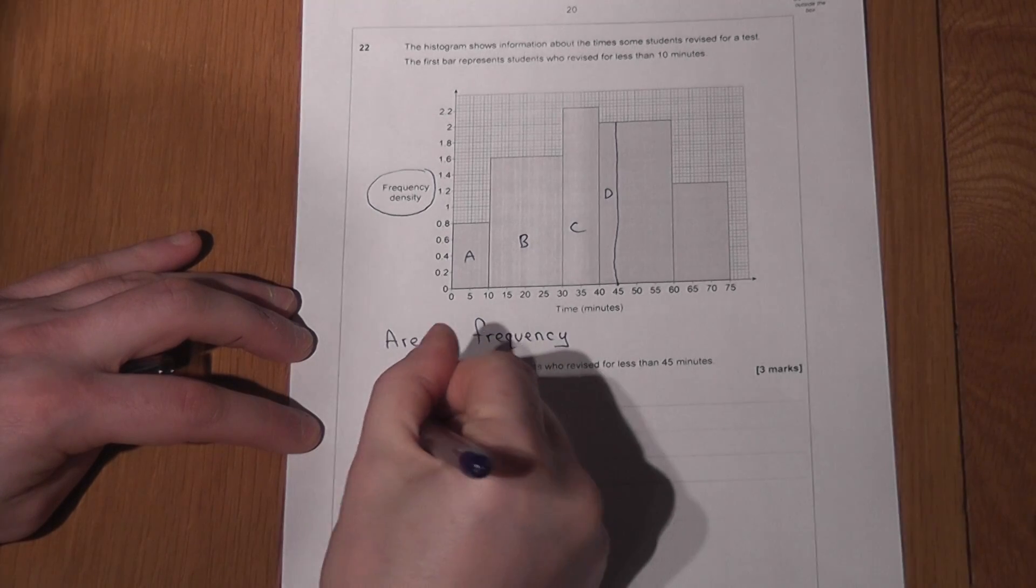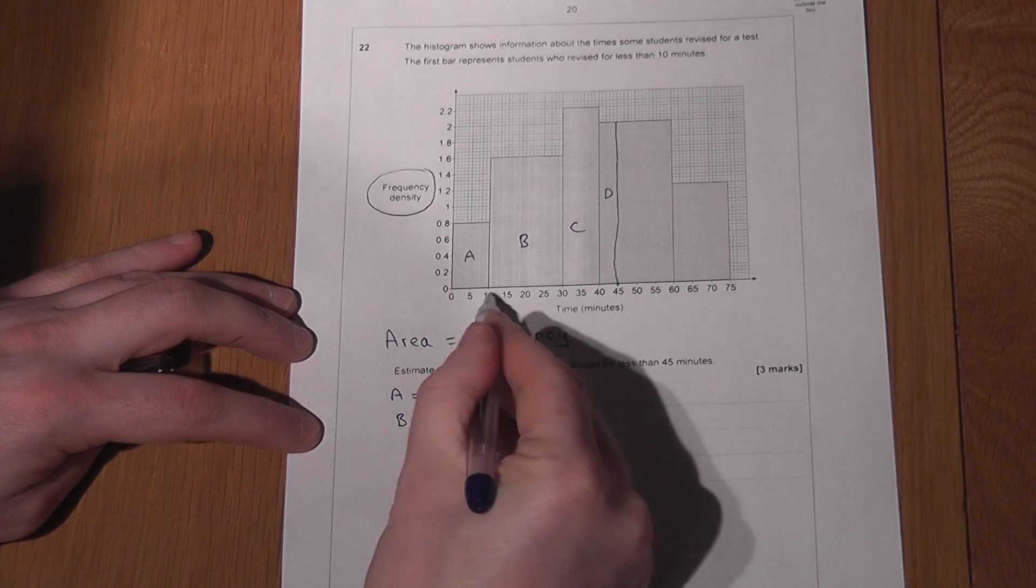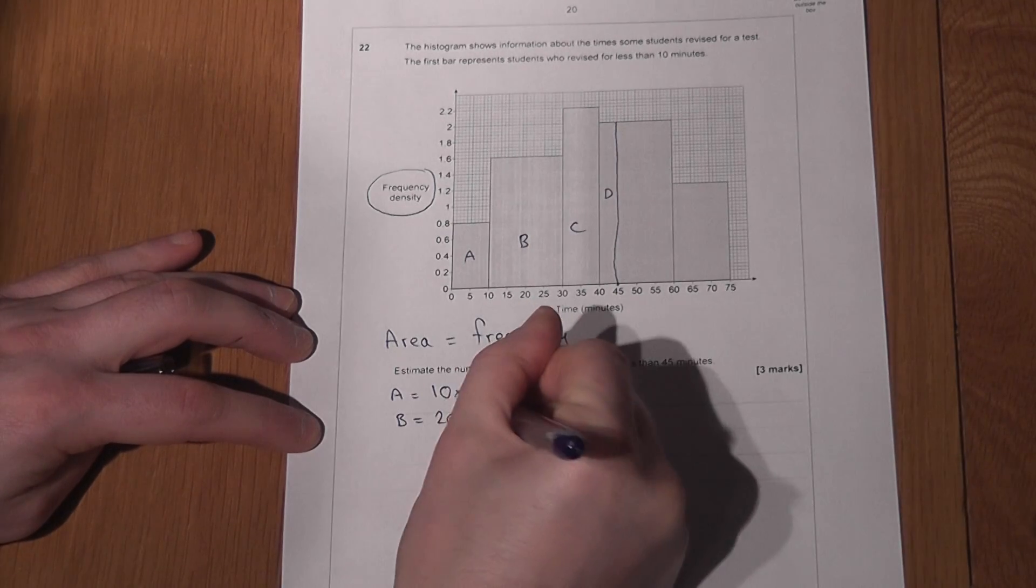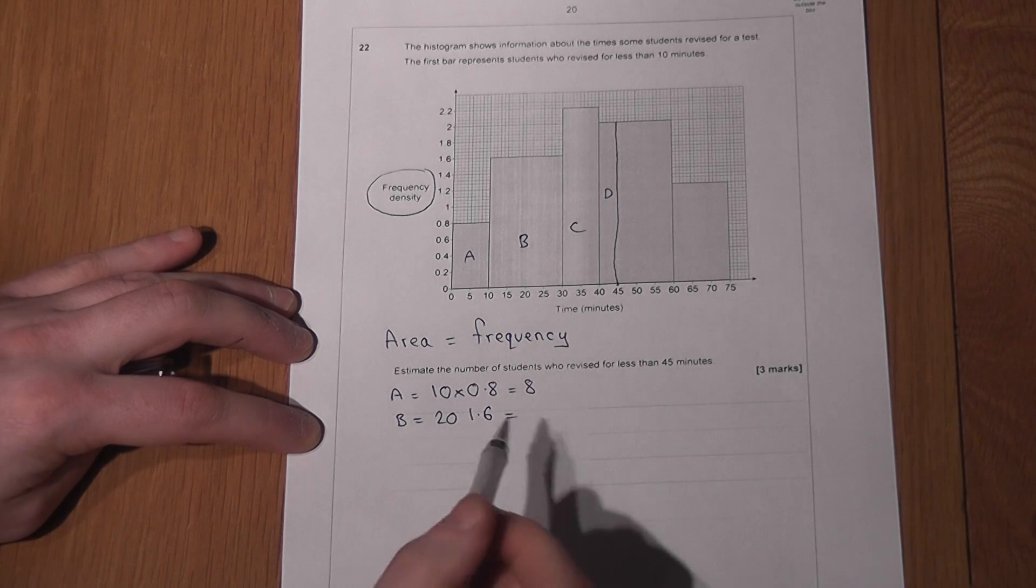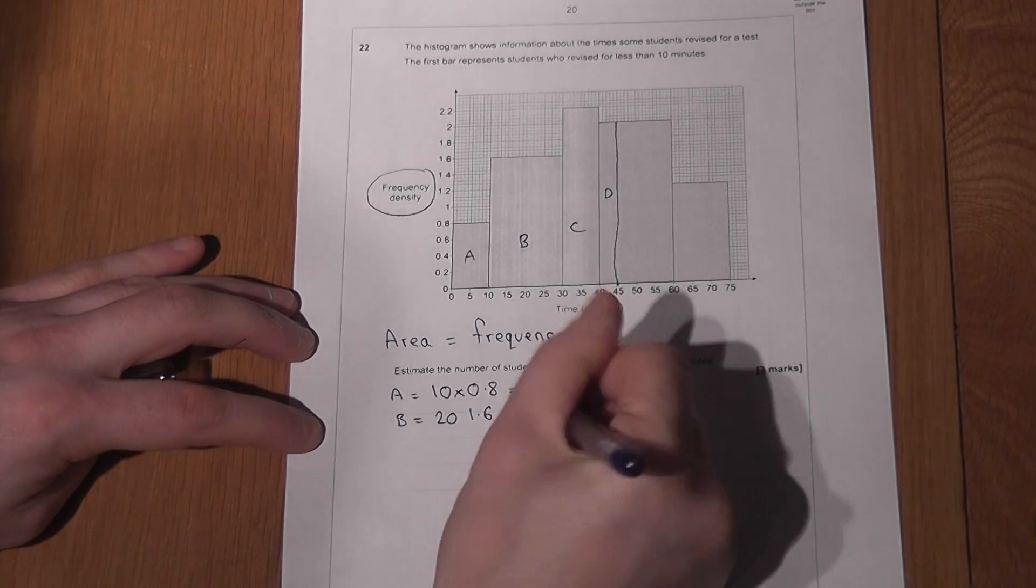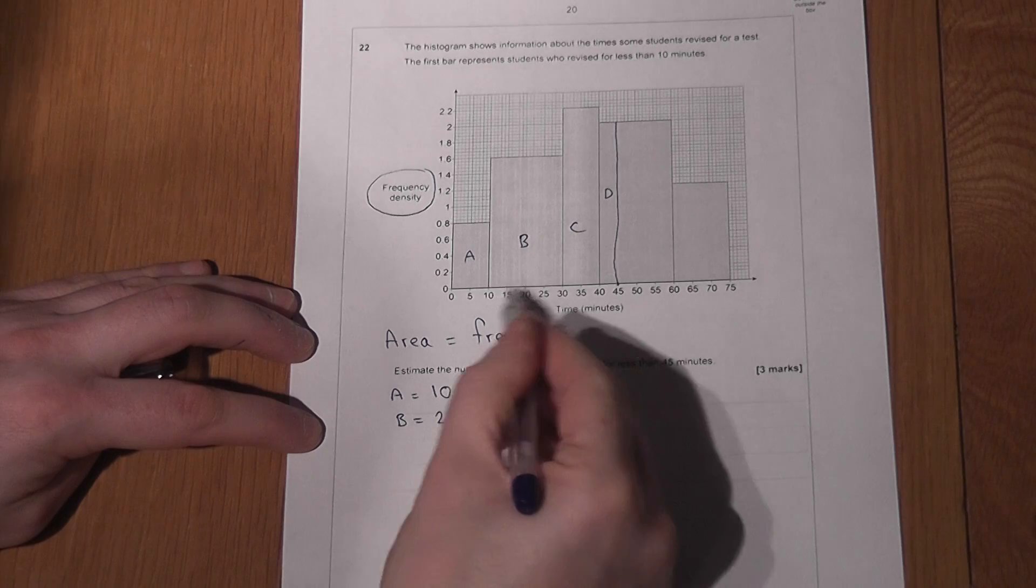I'll now keep on going. Area B has got a width of 20 but a height of 1.6. Well 2 times 1.6 is 3.2, times by 10, 32. So 32 people took between 10 and 30 minutes to revise for the test.